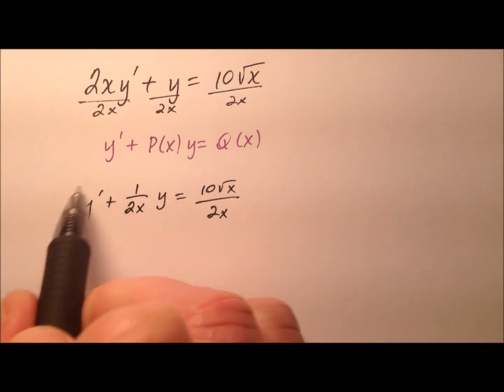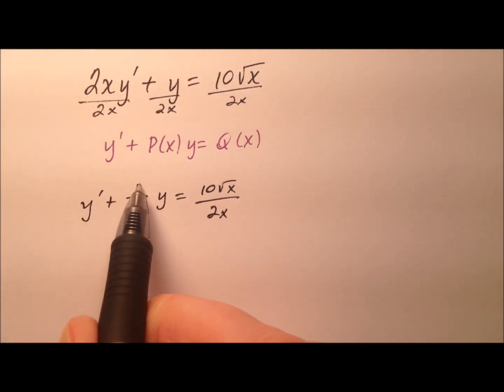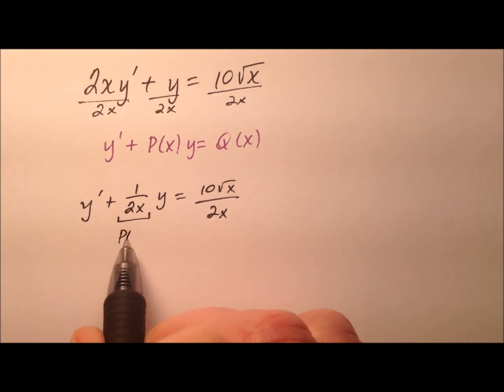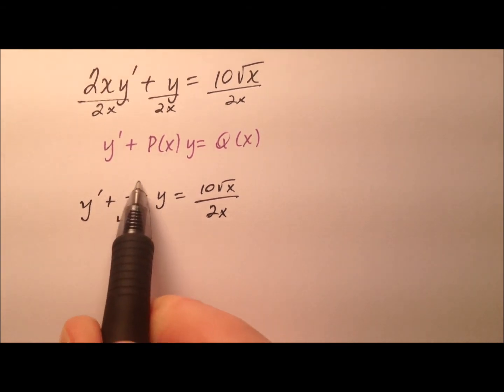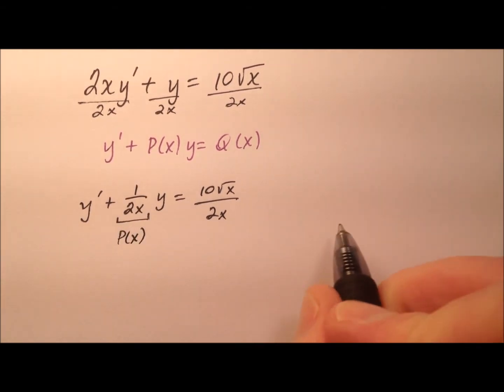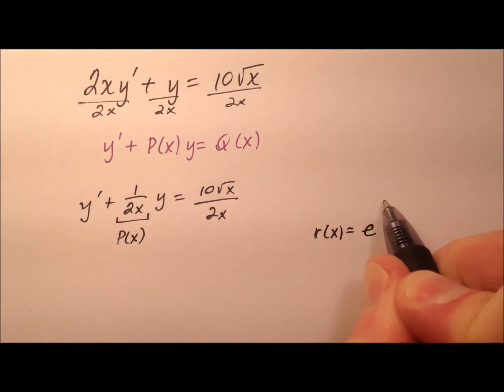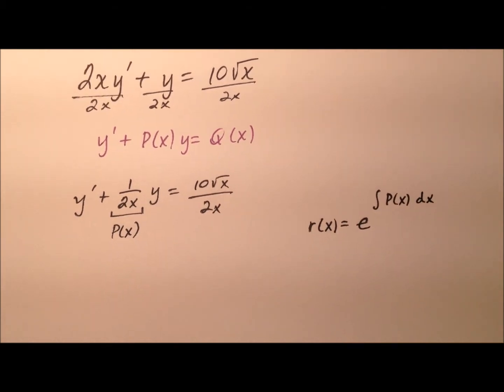So I have this left side written y prime plus 1 over 2x and then times y. So I know my p of x is going to be this 1 over 2x. So my integrating factor, we'll call that r of x, is e to the power of the integral of p of x with respect to x.